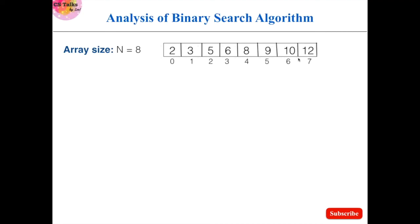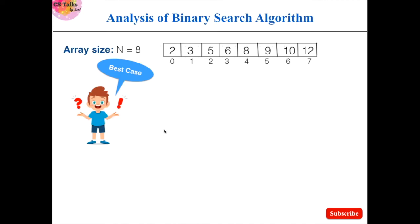The elements are sorted because binary search algorithm works efficiently on sorted data. The best case will occur when the first comparison is correct — that is, when the search element is equal to the very first middle element of the array. Only in that situation will the best case occur.